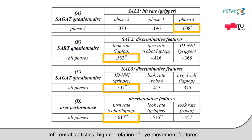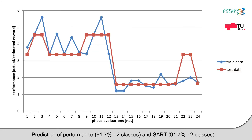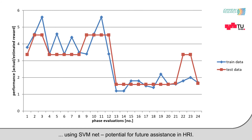Inferential statistics show a high correlation of eye movement features with situation awareness and performance. Prediction of performance and SART using SVM shows potential for future assistance in human-robot interaction.